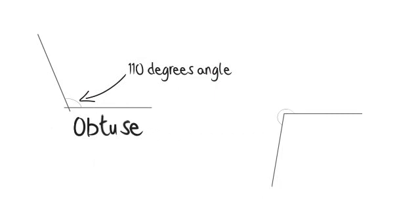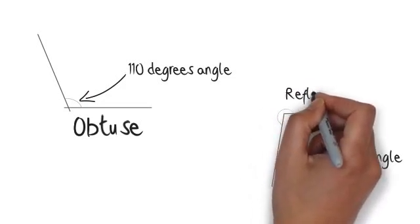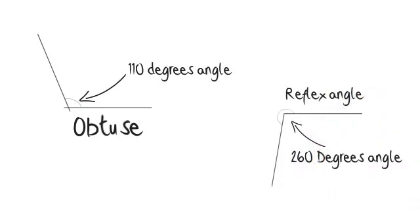Next example. Let's look at this example here. This angle here is 260 degrees, which is less than 270 degrees, which is 3 quarters, but more than a straight line, which is 180 degrees. The name of this angle here is a reflex angle.